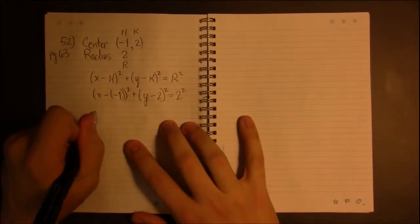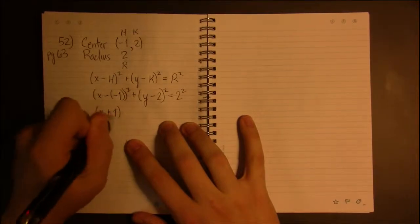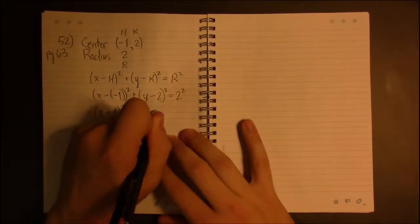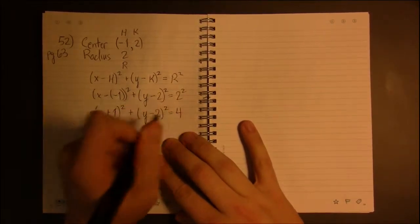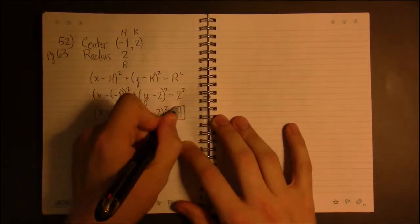And apart from a little simplification, because minus minus one is just plus one, and two squared is four, this is it. This is the equation of a circle.